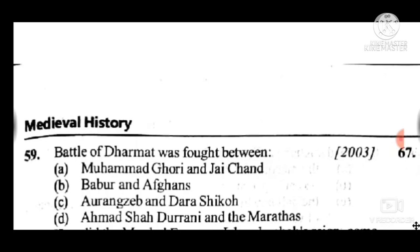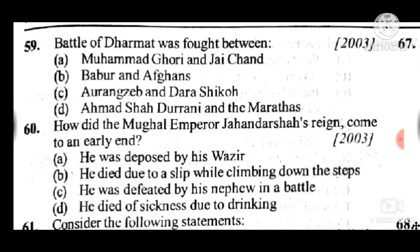Question 59: The Battle of Dharmat was fought between — answer is C, Aurangzeb and Dara Shukoh. Question 60: How did the Mughal Emperor Jahandar Shah come to an early end? Answer is C — he was defeated by his nephew in a battle.